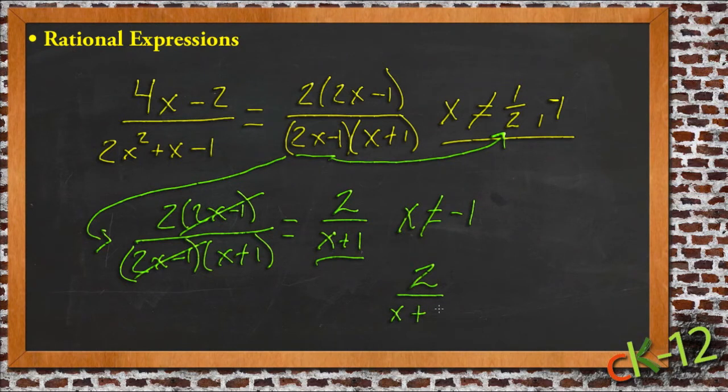So we would say, in this case, 2 over x plus 1, where x is not equal to 1 half. In fact, we could also say it's also not equal to negative 1, but hopefully anybody that sees this would be able to tell right away that that was the case, because you can see that negative 1 would make that 0.